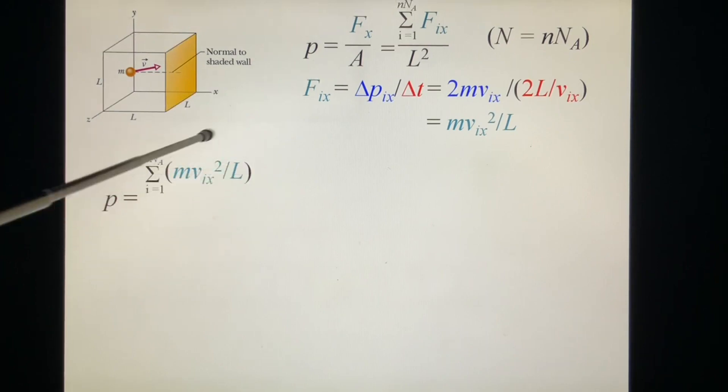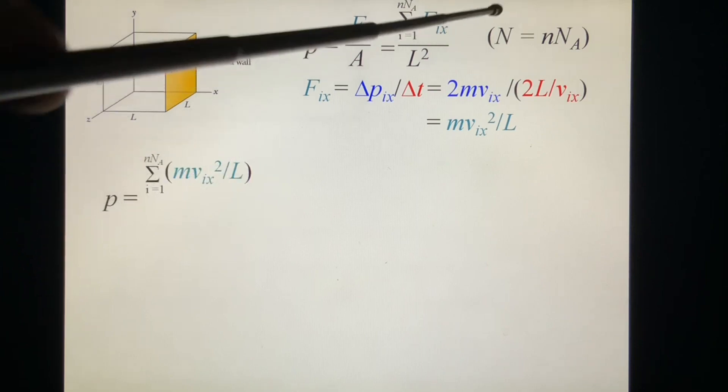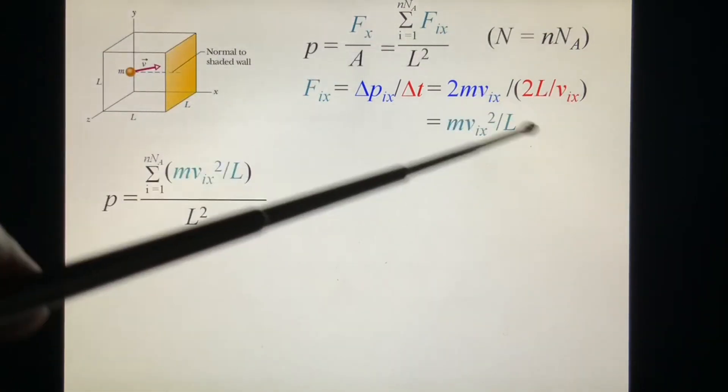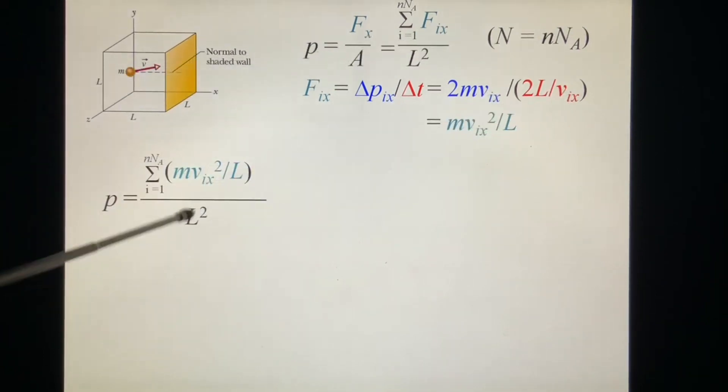We put it inside and we see m Vix squared over L. The 2's cancel out. We put Fix inside the total force. So Fix, where i can be 1, 2, 3, 4 until NA. And we have L times L squared equals L cubed, which is V. This m is the mass of one molecule. I take it out. So we finally get this answer.